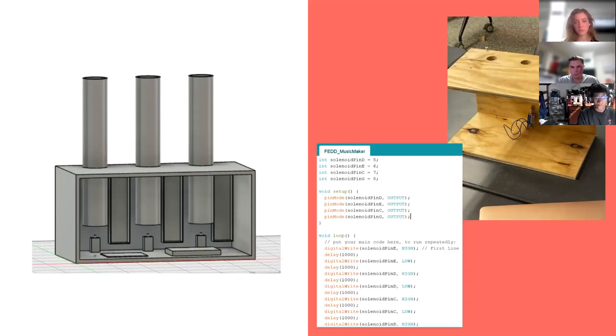After further realizing, we realized that the song, Mary Had a Little Lamb, absolutely needed a fourth solenoid. So we decided to change the initial design and added a fourth hole and pipe to house that fourth note.